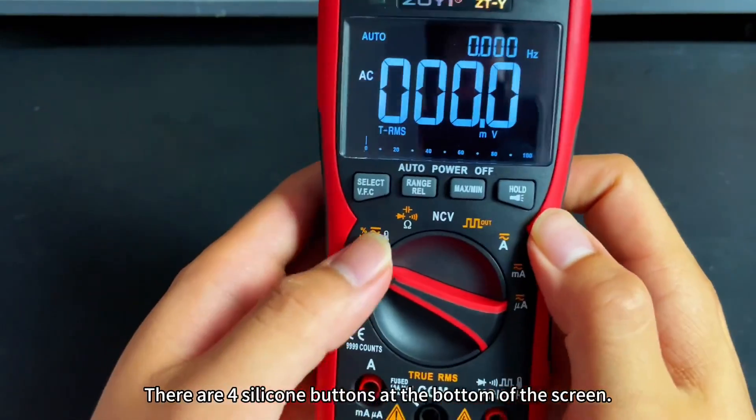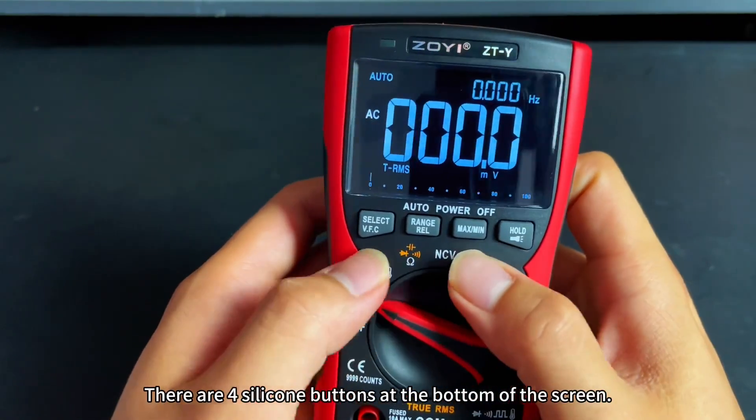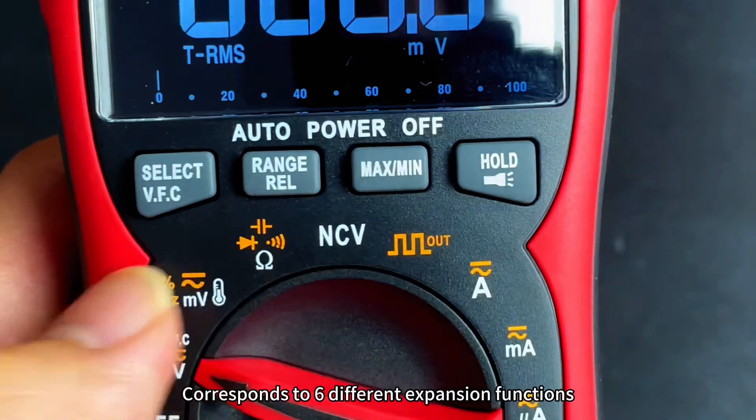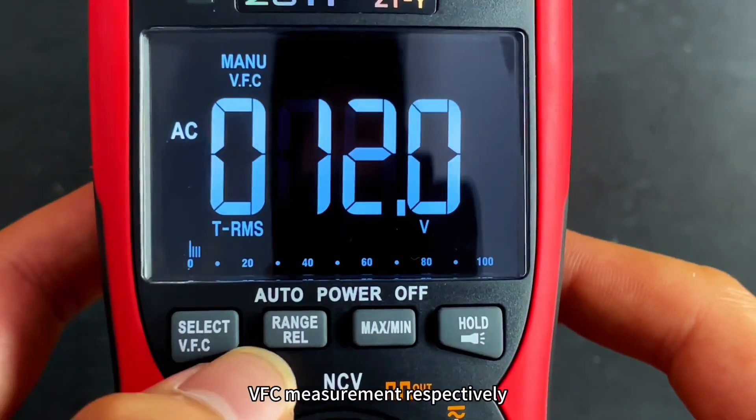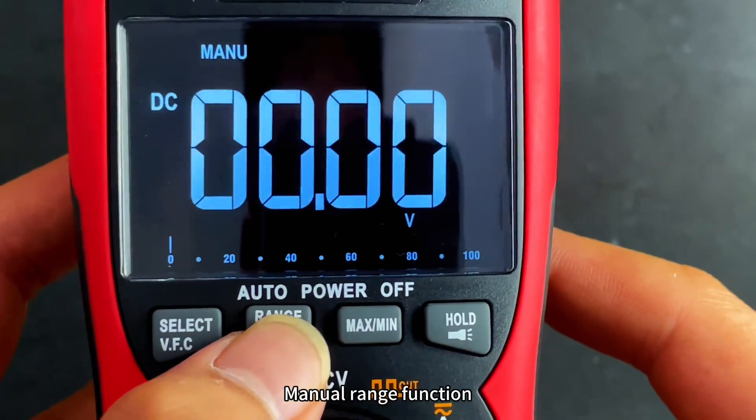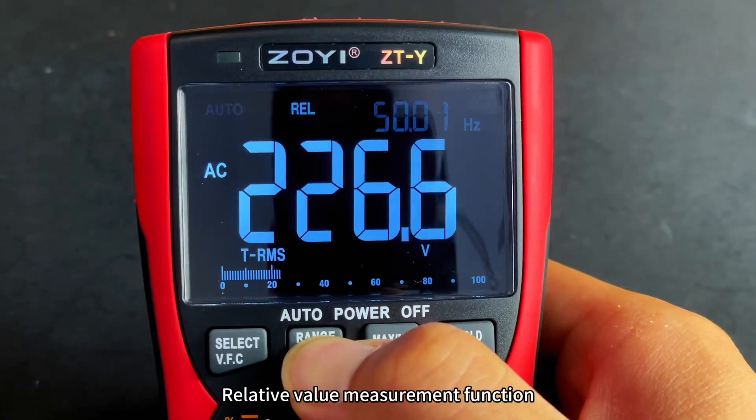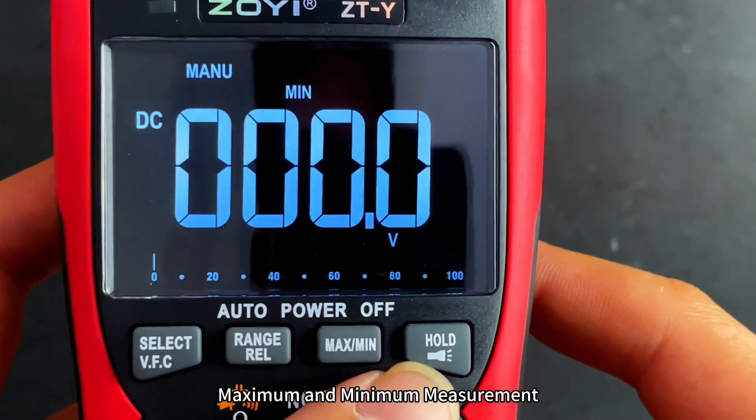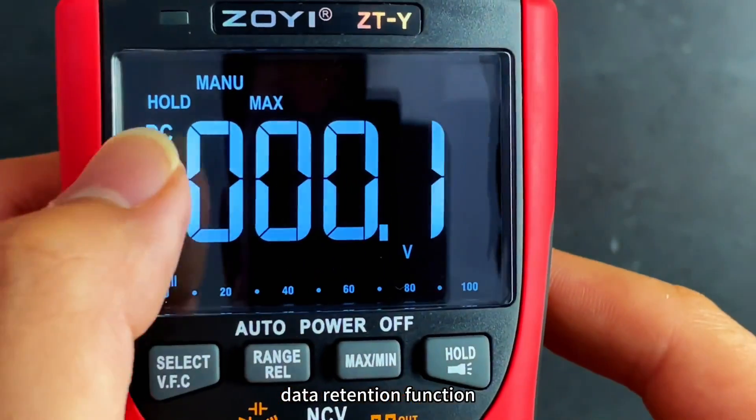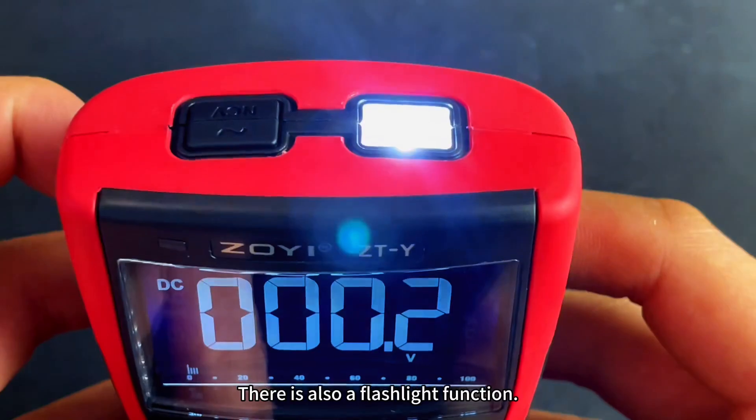There are 4 silicone buttons at the bottom of the screen, corresponding to 6 different expansion functions: VFC measurement, manual range function, relative value measurement function, maximum and minimum measurement, data retention function, and a flashlight function.